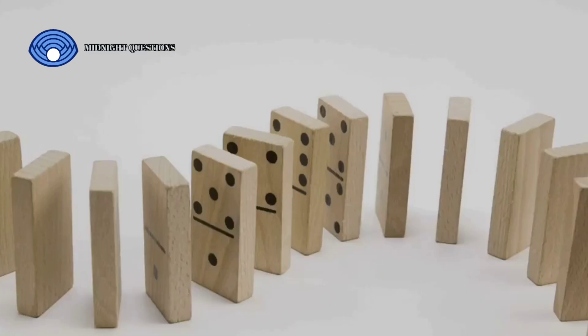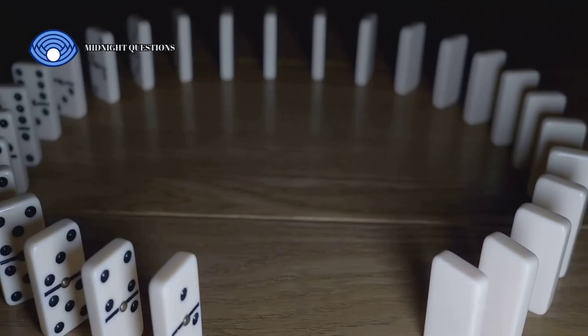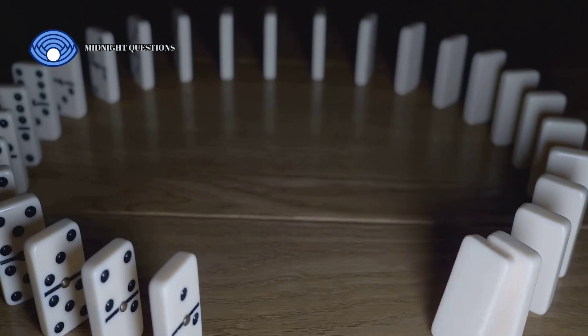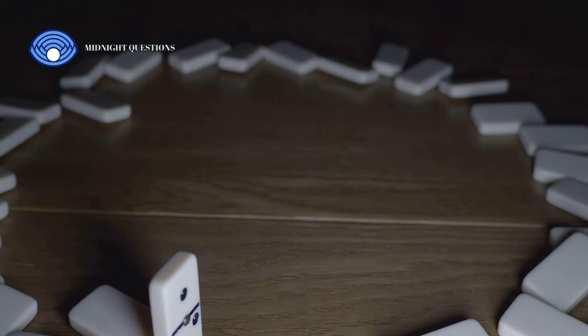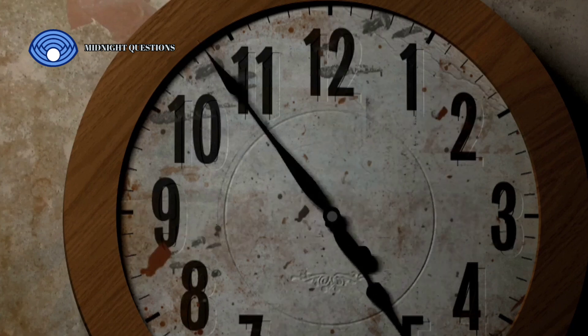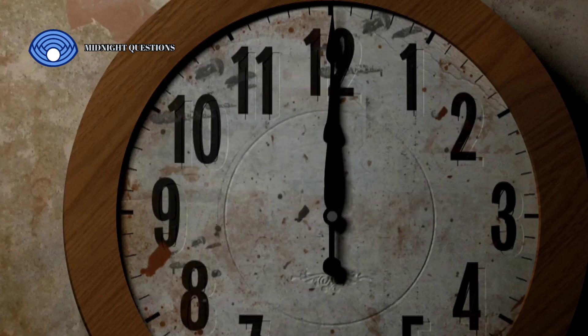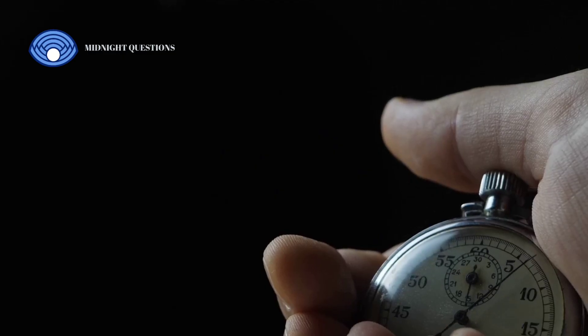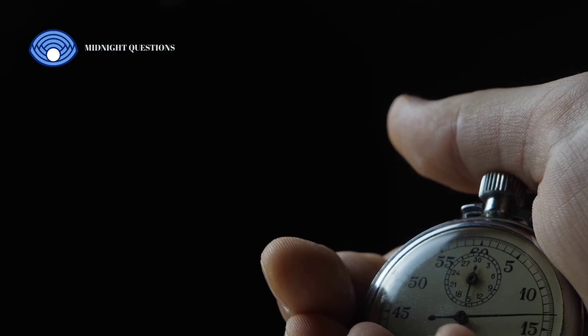These paradoxes raise significant challenges to the concept of time travel. If time travel were possible, it could violate the principle of causality, which states that an effect cannot occur before its cause. This principle is fundamental to our understanding of the universe. Moreover, there's the issue of time dilation, a concept from Einstein's theory of relativity. According to this theory, time slows down as you approach the speed of light. So if you were to travel at near-light speeds, you could return to find everyone you know aged significantly, while you remained relatively the same age.